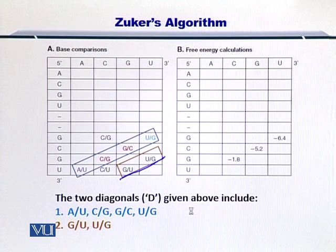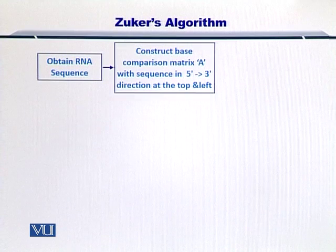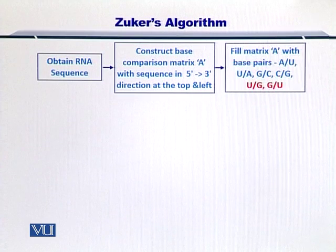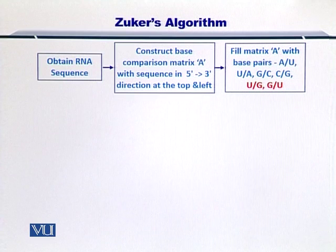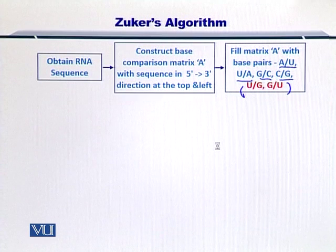Now let's take a look at the flowchart. You begin with obtaining the RNA sequence. You construct the base comparison matrix, which was given by A in the previous slide, and the sequence should be in the 5' to 3' end at both the top as well as the left side. Next, you fill matrix A with the base pairs that are complementary and are able to make hydrogen bonds. This includes AU, UA, GC, CG, as well as UG and GU.